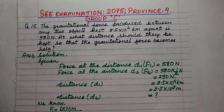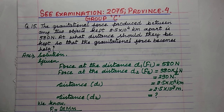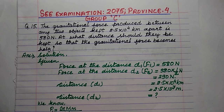In this video series, we have been solving questions of previous board exams, SEE examination, grade 10, subject science. Now, we are going to discuss answers of SEE examination question paper 2075, province number 4. We are going to discuss answers of group C.